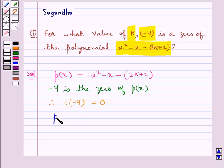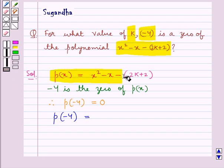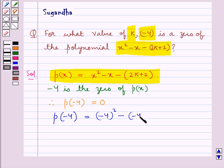Now let's find p(-4). This is obtained by substituting x = -4 in the given polynomial p(x). So p(-4) = (-4)² - (-4) - (2k + 2).